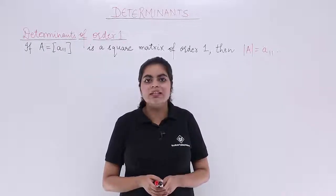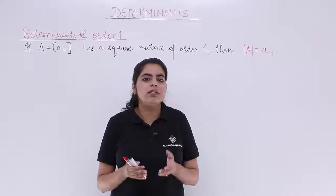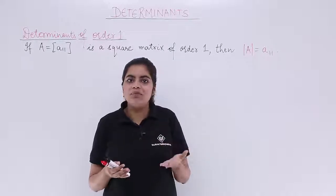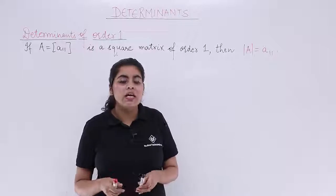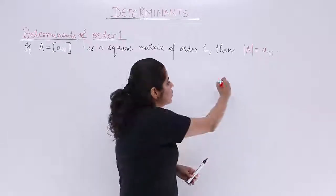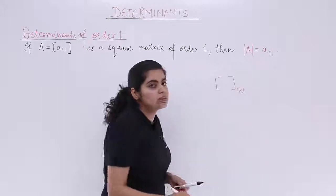Let's see what is the determinant value of order 1. Now we know that order 1 means order 1 by 1, and 1 by 1 means 1 row and 1 column. So any matrix which has only 1 row and 1 column is a single row element.